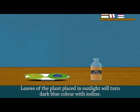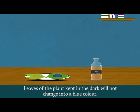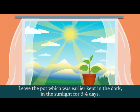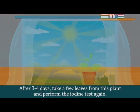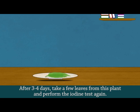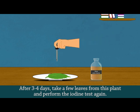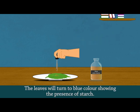Leaves of the plant placed in sunlight will turn dark blue in color with iodine. Leaves of the plant kept in the dark will not change to a blue color. Leave the pot which was earlier kept in the dark in sunlight for three to four days. After three to four days, take a few leaves from this plant and perform the iodine test again. The leaves will turn blue, showing the presence of starch.